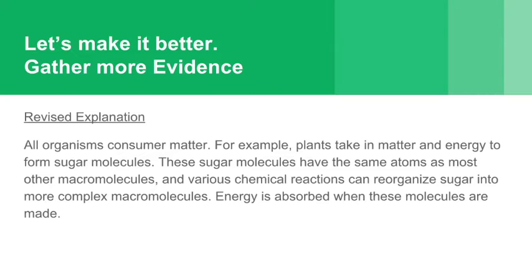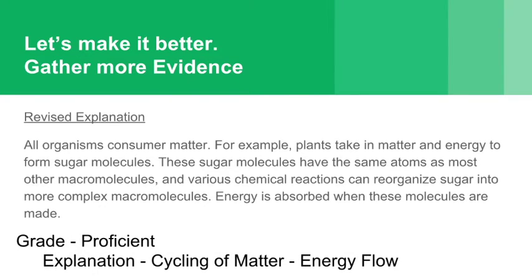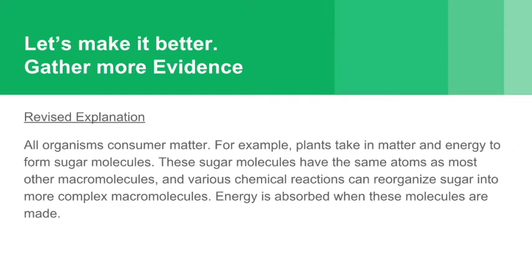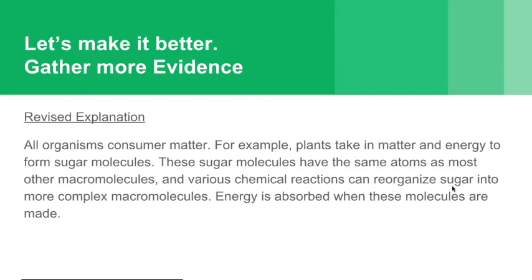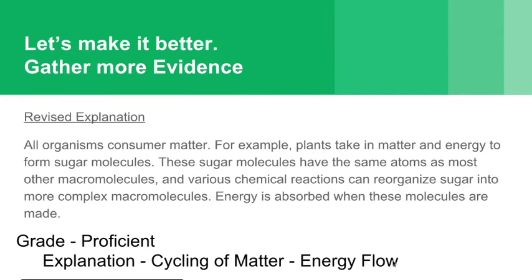Energy is absorbed when these molecules are made. This is a pretty good explanation; however, it would probably only get you a proficient in my class. The good parts of this answer are that you're able to focus on the unobservable parts of this phenomena of sugar becoming macromolecules — you're focusing on the atoms. We were also able to revise it based on new evidence. More specifically, we're starting to get into this idea of energy going into and out of each of these reactions. The energy is going into the process to make the sugar, and then energy is coming out of sugar and going into other molecules when they are being made. You're showing this flow of energy while matter is changing forms.